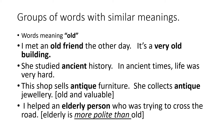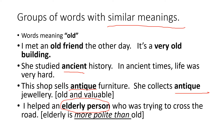Now let's talk about synonyms — words with similar meanings. For example, 'old.' There are many ways to express the concept of old. We use ancient for history, such as 'she studied ancient history about the past.' For furniture, we can use antique, meaning it was made a long time ago, perhaps a hundred years ago — for example, 'she collects antique jewelry.' And we say 'an elderly person' because elderly is more polite than old.